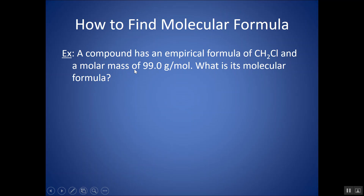So I want to take a look at an example, and we'll do it step by step so you can see how to do this process. The compound has an empirical formula — here's the empirical formula. Notice it's the simplest whole number ratio, and I give you the molar mass of the compound. So this is the molar mass — not of the empirical formula — this is the molar mass of the molecular formula, which is not given. And they want to know what is the molecular formula.